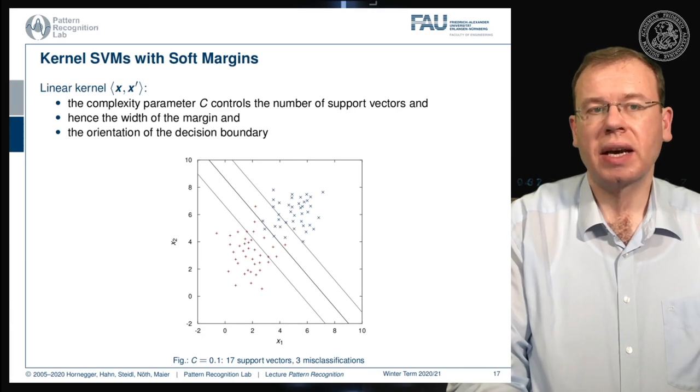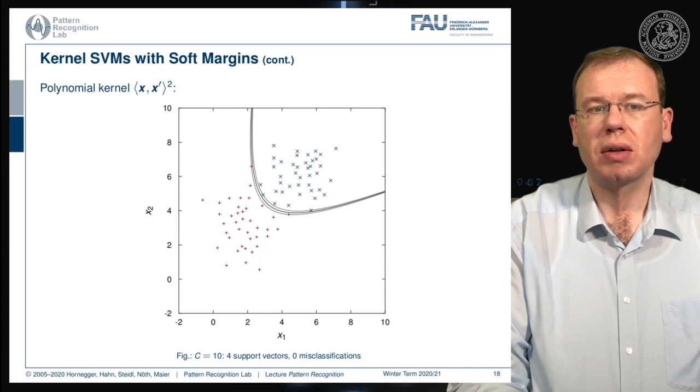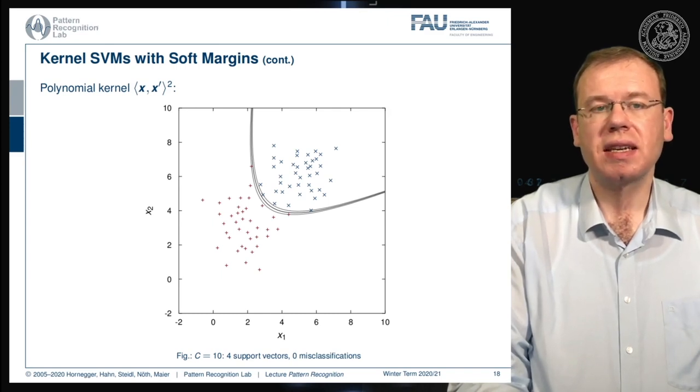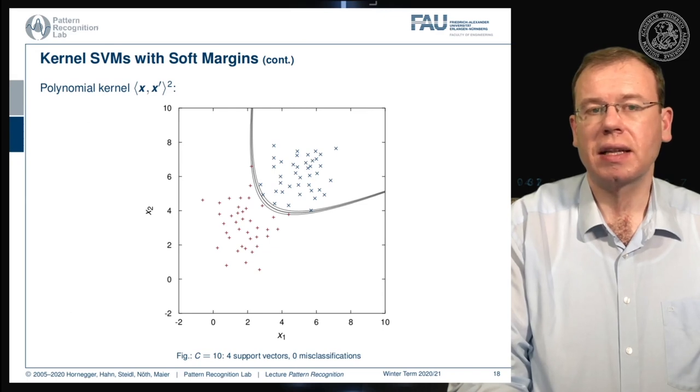Now we can apply the same idea in a polynomial space. And now if I project the polynomial decision boundaries and margins back into the original domain, you can see here how the decision boundary is actually displayed in the original data space. So you see here the polynomial kernel and the margins.